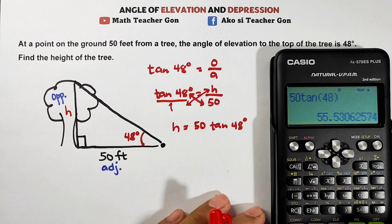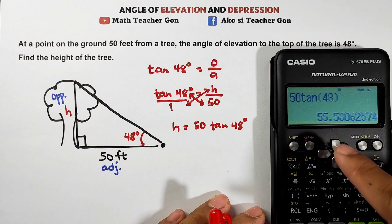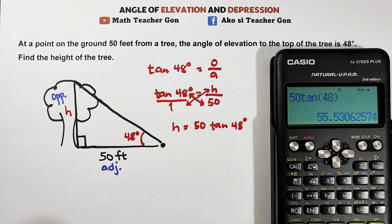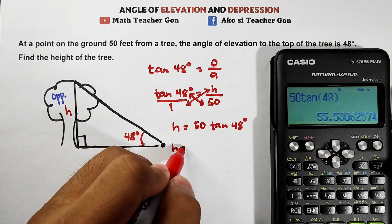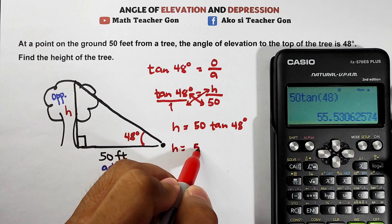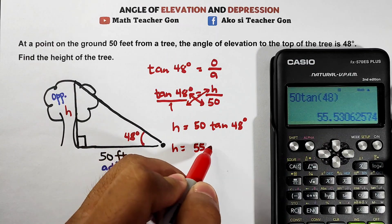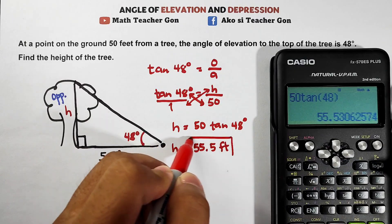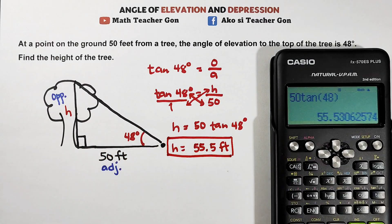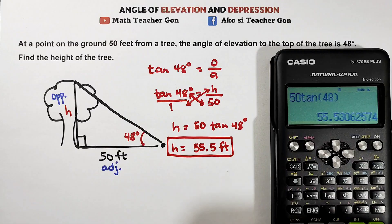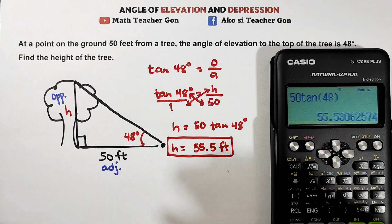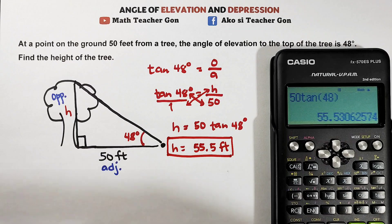So what we get here is this one. We have 55.53. I normally use single decimal place. So I will go with h equals 55.5 feet. This is now the height of the tree that we have in this given problem. So tall, right? So we rounded off correctly. We have 55.5 feet as the height of the given tree.